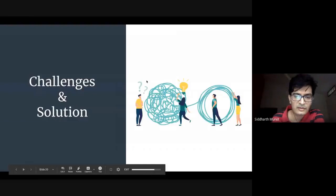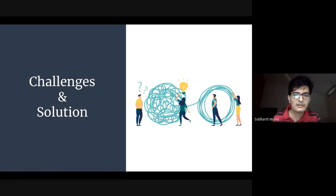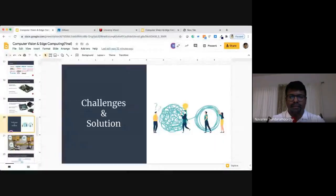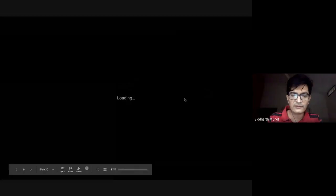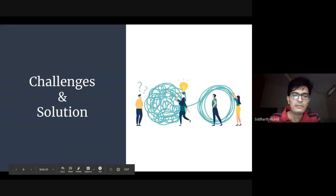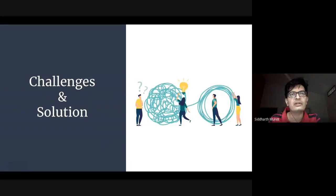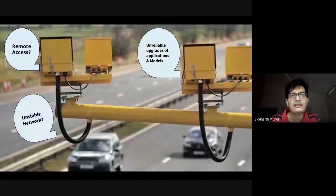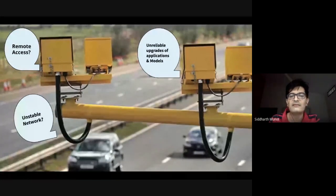Now I'll talk about challenges faced when deploying a real solution, predominantly in computer vision applications. There are many elements — you have a camera, networking, and most places where things fail is a network problem. Then there's how do you reliably upgrade your models. These are live problems you face when deploying a computer vision application: unreliable updates of applications and models, how to remotely access devices to debug and diagnose problems, and what to do to monitor an unstable network.